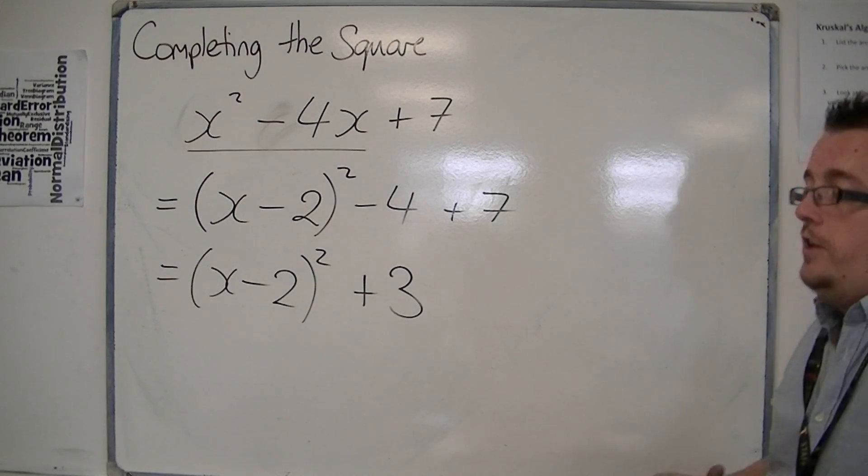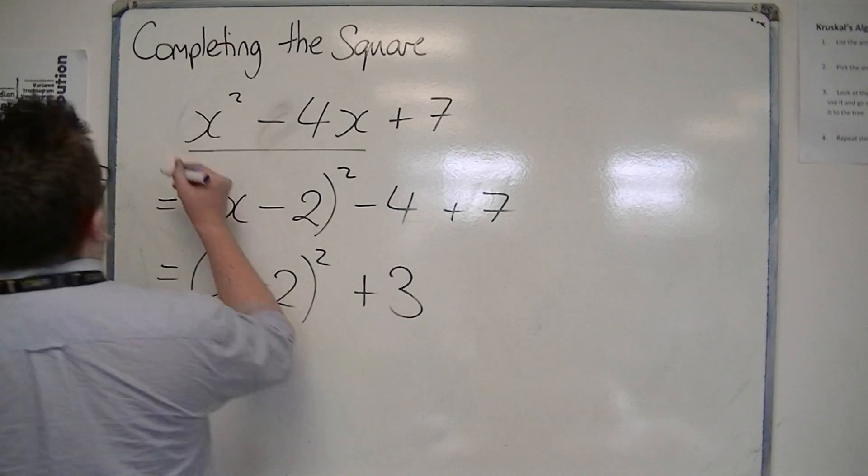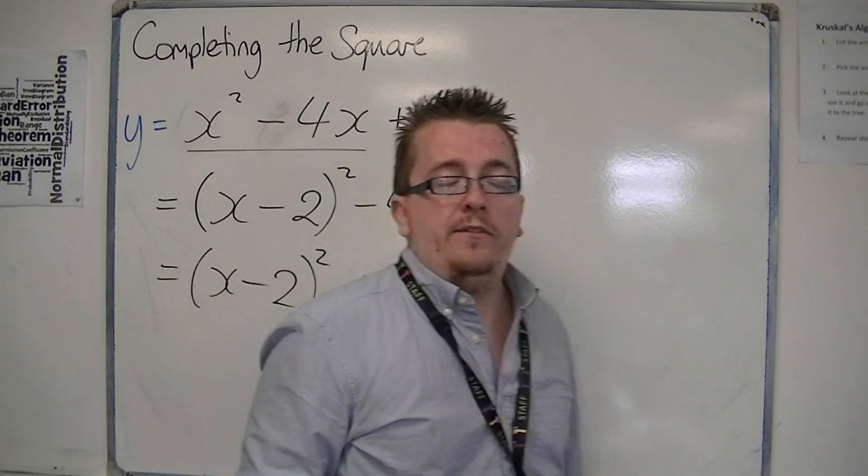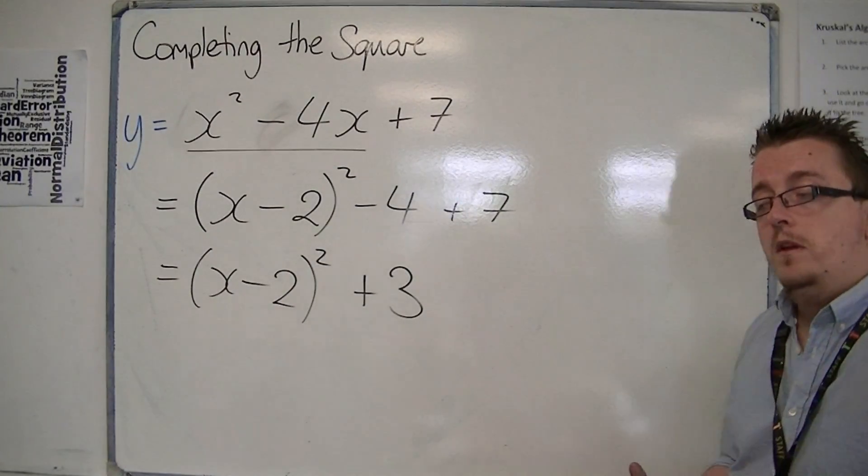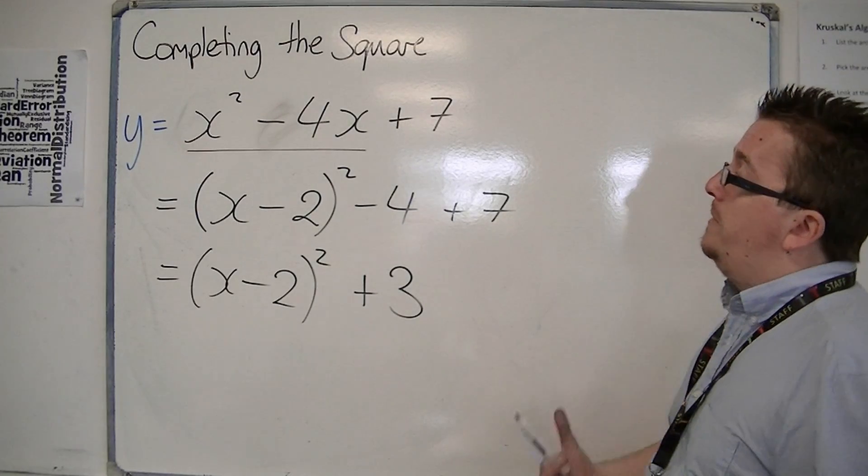So what you can use this for is if this had been y = x² - 4x + 7, and you were asked to find the vertex, then what you'd be able to say is, I've completed the square,